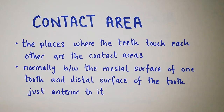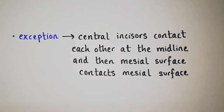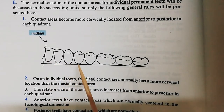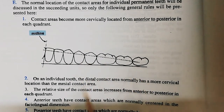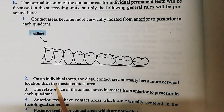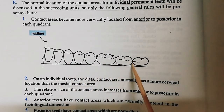In a complete arch, each tooth touches two adjacent teeth except for the most posterior one. The places where the teeth touch each other are the contact areas. These are normally between the mesial surface of one tooth and the distal surface of the tooth just anterior to it. There is an exception: central incisors contact each other at the midline, where a mesial surface contacts a mesial surface. This diagram shows that as we move from an anterior tooth to a posterior one, the contact area moves cervically — that is, it moves downwards.